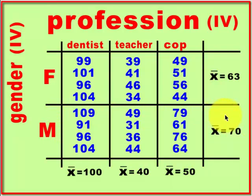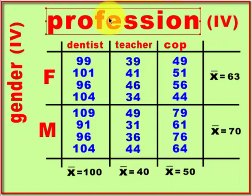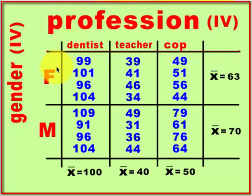If you're just looking at the main effect of an IV, you simply compare the marginal means of that IV. If we want to see if there's a difference between salaries and gender, we look at those marginal means. The word 'main effect' means there's a significant difference between the levels of that specific IV — significant F if you ran a one-way ANOVA with that single IV.